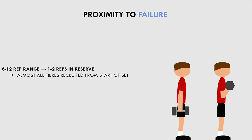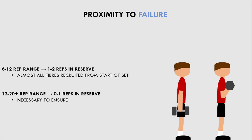This is because the loads are heavier and all motor units will probably be recruited basically from the start of the set, so all muscle fibers will be taxed and receive a hypertrophy stimulus. However, when lifting lighter loads, we need to take each set closer to failure to ensure the highest threshold motor units are recruited and trained. Practically, this means that when we lift in the 12 to 20-plus rep range, we should take each set around 0 to 1 reps before failure to ensure every single motor unit is recruited and trained. If we don't take light loads close enough to failure, we will only train the low threshold motor units and never fully exhaust the fast twitch muscle fibers, which will simply result in less hypertrophy per set.